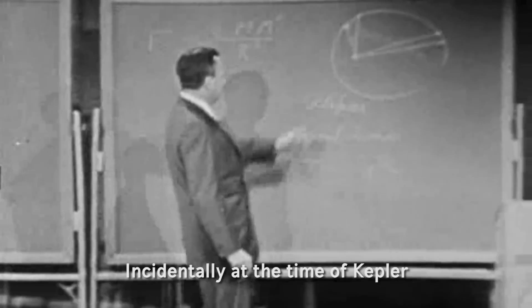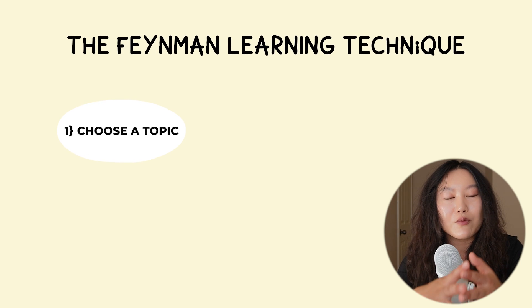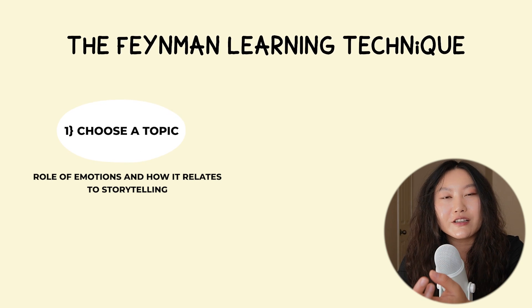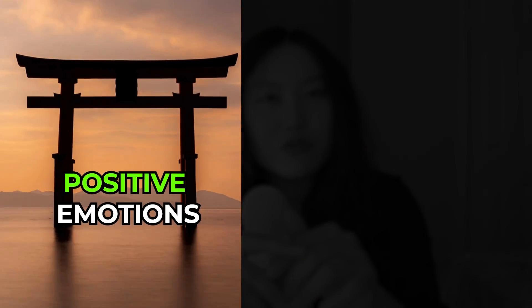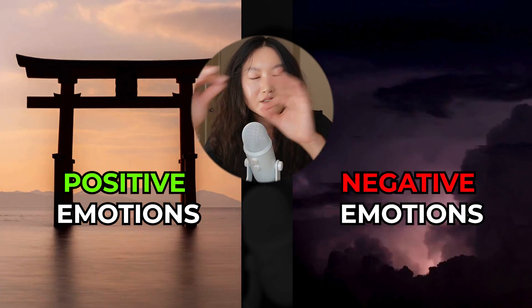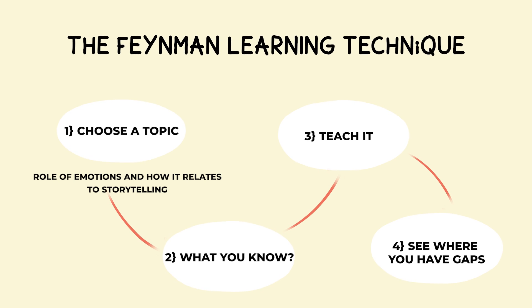I also like to use the Feynman technique with ChatGPT. This was named after Nobel Prize-winning physicist Richard Feynman, who has a method for deeply understanding concepts. Step one: choose a topic — for example, the role of emotions in storytelling as part of my YouTube video study plan. Step two: write down what you know. Step three: teach it to ChatGPT. Step four: identify gaps in your knowledge and fill them in by asking ChatGPT directly — much faster than the traditional method. I realized I can do this even faster by using ChatGPT's speech functionality and saying it instead of typing.